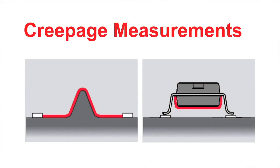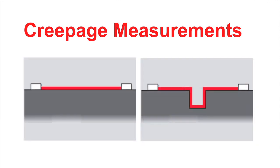Now let's talk about creepage. Creepage is the shortest distance between two uninsulated conductors along the surface of an insulating material. Let's look at the diagram of different examples of how to measure the creepage distance. You can see the creepage is the measure of the shortest distance along the surface between uninsulated conductors.